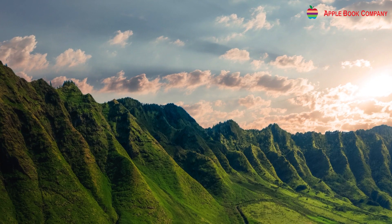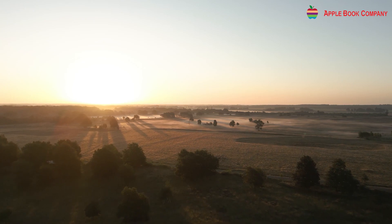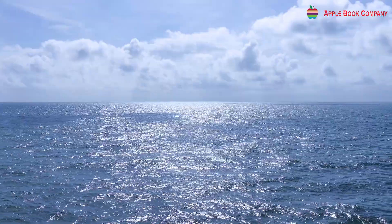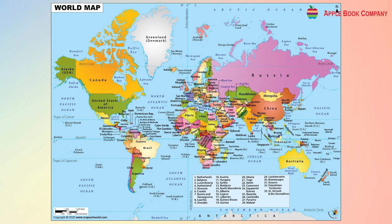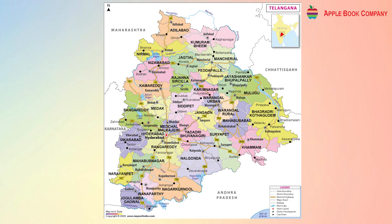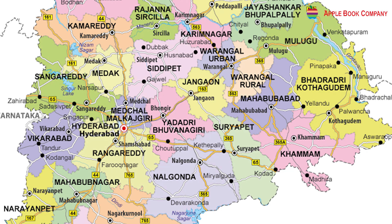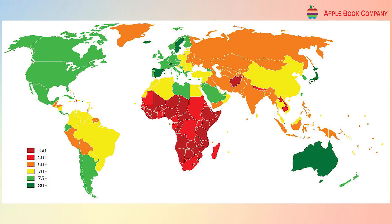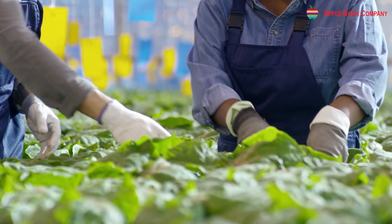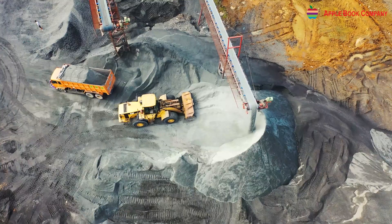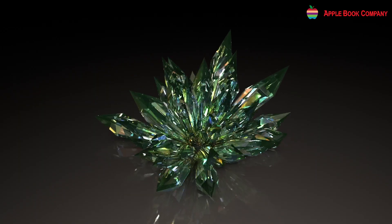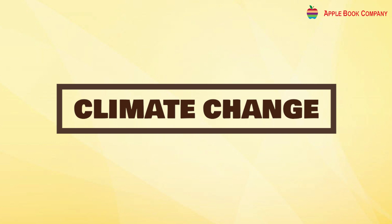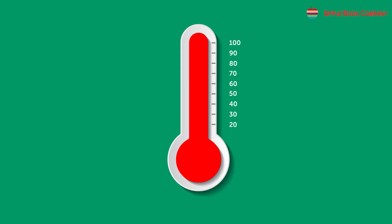There are three types of maps. Physical maps display Earth's natural features like mountains, plateaus, plains, rivers, and oceans. Political maps illustrate continents, countries, states, cities, towns, villages, and their boundaries. Thematic maps provide specific information like climate, vegetation, industries, or minerals in a region.